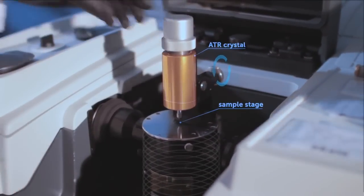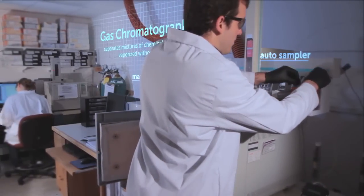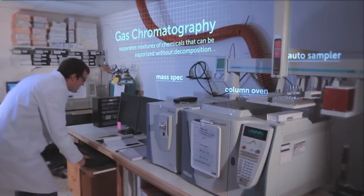The second method of analysis, the GC, is powerful because it separates the chemicals into individual compounds, identifies each, and provides the exact concentration of each of the chemicals.